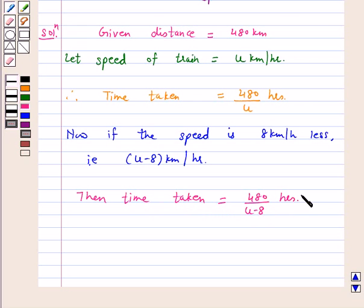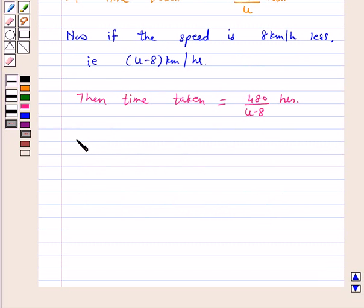Now, according to the question, if speed is 8 km per hour less, then time taken is 3 hours more. That is 480 upon u minus 8 is equal to 480 upon u plus 3.